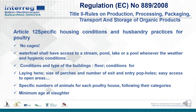Article 12: Specific Housing Conditions and Husbandry Practices for Poultry. No cages are permitted. Waterfowl shall have access to a stream, pond, lake, or pool whenever weather and hygienic conditions permit. Conditions and type of buildings fix floor conditions for laying hens, size of perches, number of exits and pop-holes, easy access to open areas, specific number of animals per poultry house according to their categories, and minimum age at slaughter.